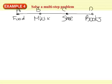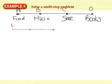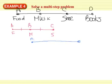Now I have some congruent parts here, but I'm going to separate these drawings. We know that these two pieces are congruent, and then we know that these two pieces are congruent — I want different tick marks to help them make sense. So let's draw just A, B, and C — food, music, and shoes — and I know these two are equal. Then I have B, C, and D — music, shoes, and books — and we know that these are equal.